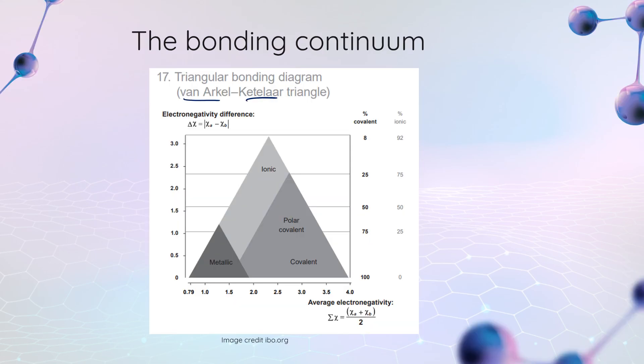And here's our Van Arkel-Ketelar triangle. It is section 17 of the data booklet, should you want to open up that data booklet and take a look. It is going to graph electronegativity difference of the two atoms involved in a bond on the y-axis. The x-axis is the average of the electronegativities of the two atoms in any given bond.